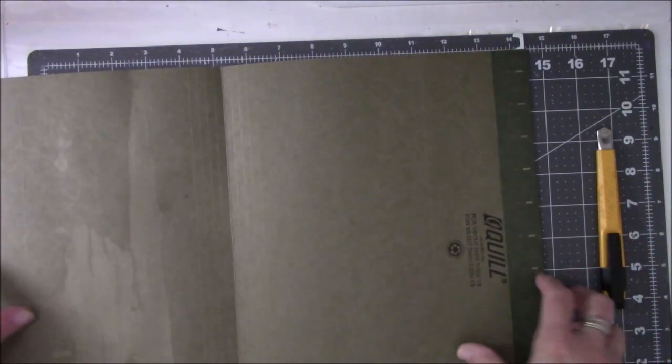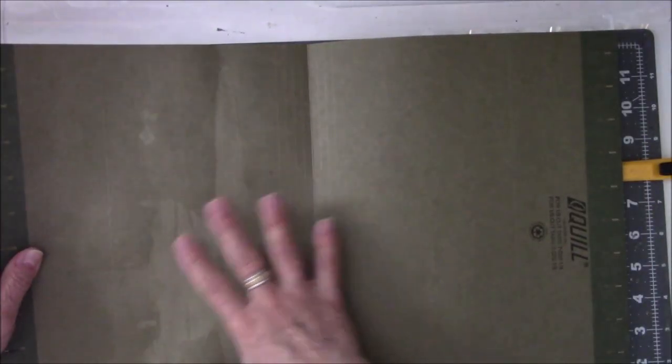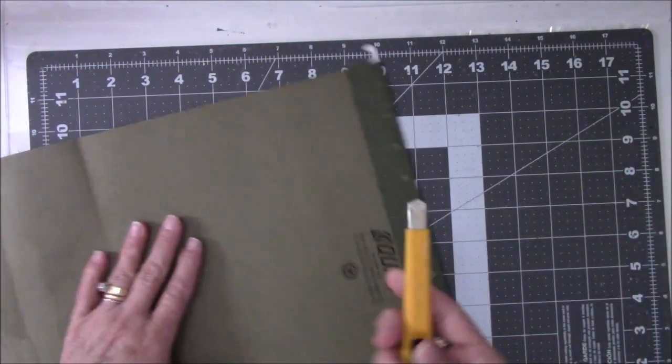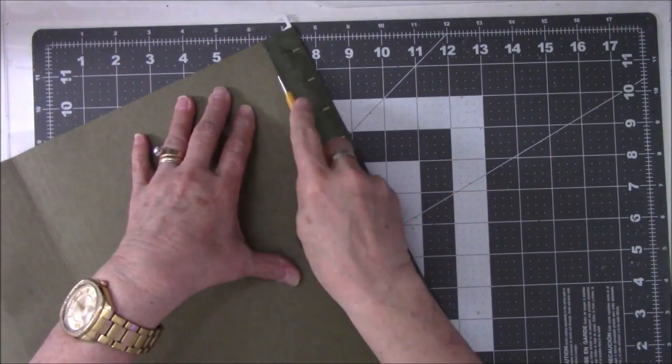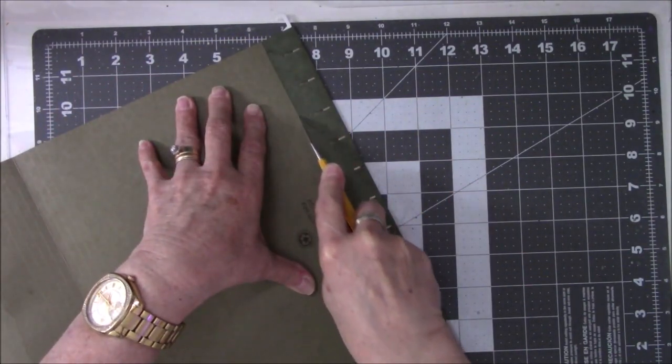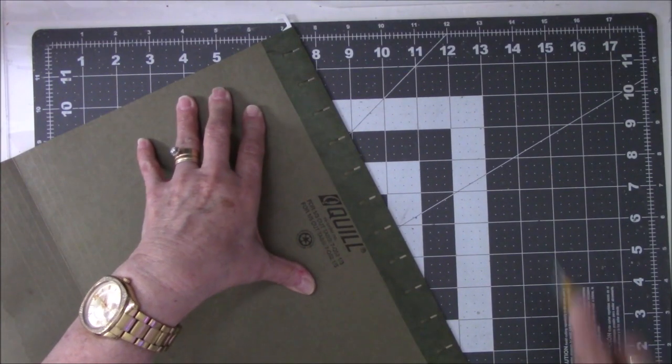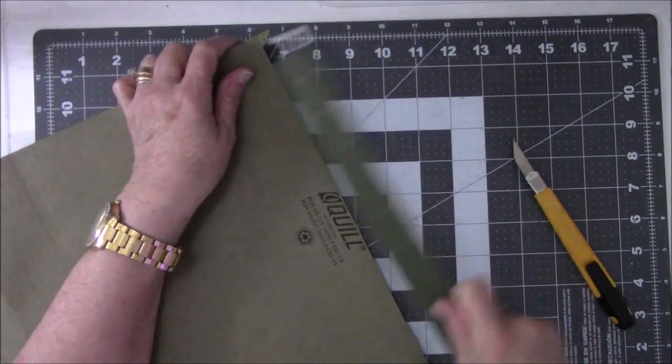You're going to get two pages out of this one folder because you get one page from one side, one from the other. The first thing you do is take scissors or some kind of cutter and run it down the side to get rid of this thing right here.